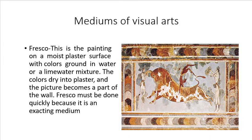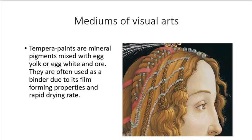The next medium is fresco. This is the painting on a moist plaster surface, with colors ground in water or a lime water mixture. The colors adhere to the plaster and the picture becomes part of the wall. Fresco must be done quickly because it is an exacting medium. Fresco is often used for mural paintings, especially during the Renaissance time in chapels and some buildings.